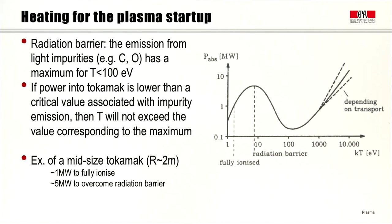The radiation barrier comes about because the emission from light impurities present in our gas and then in the plasma has a maximum for temperatures that are typically a few tens of eV, typically below 100 eV. And if the power we inject into the tokamak is lower than a certain critical value associated with this impurity emission, then the temperature will never be able to exceed this value corresponding to the maximum of the emission by impurities.